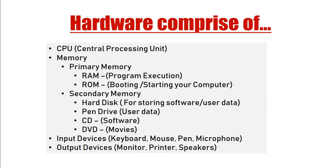Then we have input devices and output devices. Input devices include the keyboard and mouse, by which we give input to the system. Output devices include the monitor, printer, and speakers. These are easy to understand. The most important thing to focus on is primary memory — what exactly it is. In future, if you go for an interview, simple questions can be asked, like whether RAM is volatile or ROM is volatile, so you should know this clearly.